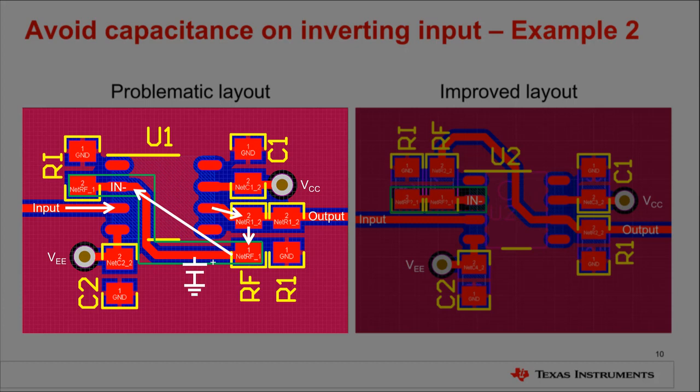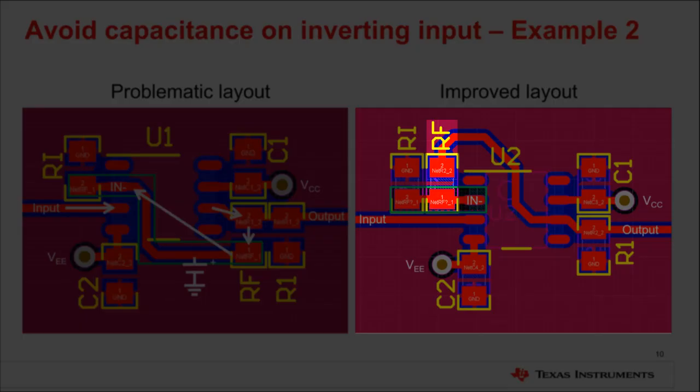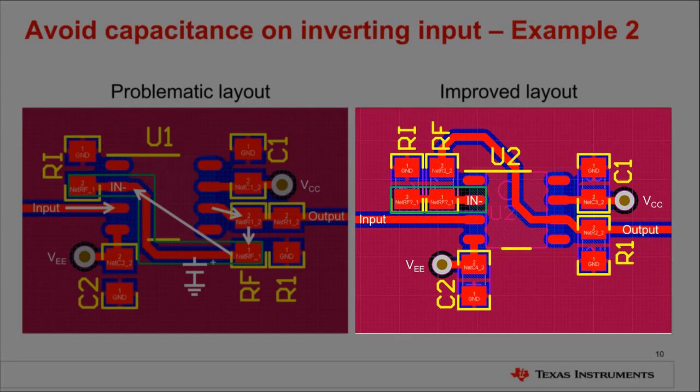On the right is an improved version of the layout. Notice that the RF component has been moved closer to the inverting input pin. Although the trace from the output pin is longer, the trace going into the N minus pin is now much shorter. This drastically reduces the parasitic capacitance on the N minus pin. Additionally, the ground plane on the second layer has been removed under the N minus trace. This also helps to remove parasitic capacitance on N minus. However, it may only be necessary for very sensitive circuits.